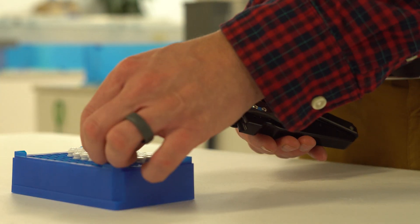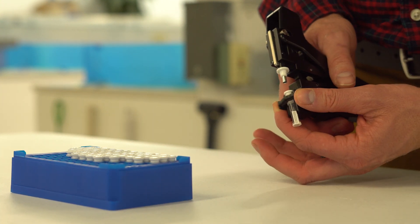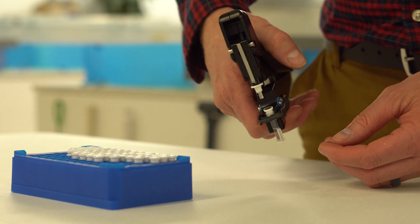Place a vial into the jaws with the aluminum top facing up. Secure the jaws around the vial. Depress the trigger smoothly to take a tissue sample.